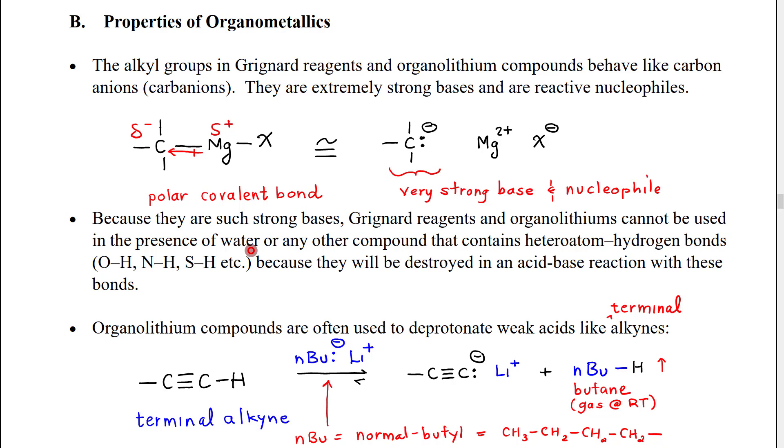We can't mix them with water, or alcohols, or amines, or sulfides, which have sulfur to hydrogen bonds, because those strong bases will very rapidly do acid-base reaction with the OH, with the SH, with the NH. That's going to place a hydrogen onto that carbon, making it no longer a negative carbon ion, and thereby not allowing it to react as we want it to.